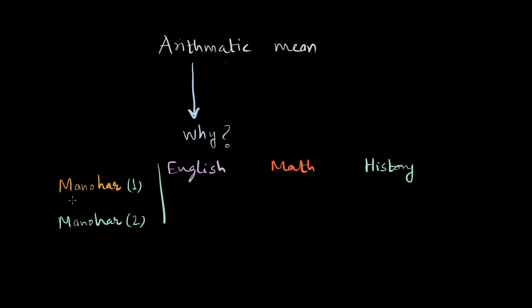So in English let's say he scored 65 out of 100 in term one. In math Manohar scored 72 out of 100 and in history he wasn't that great so he scored 57.